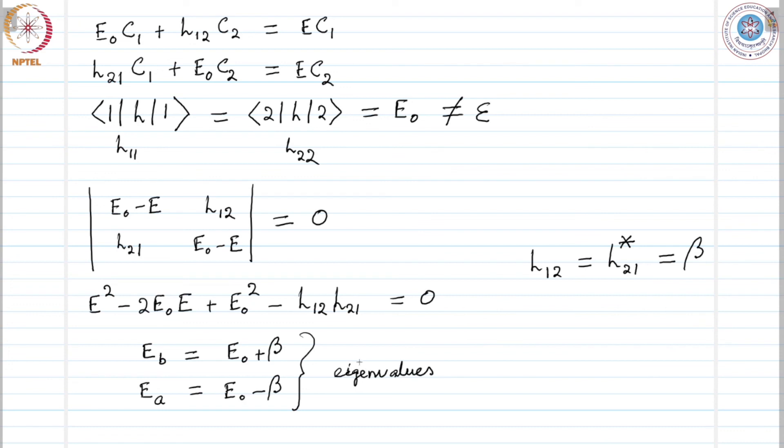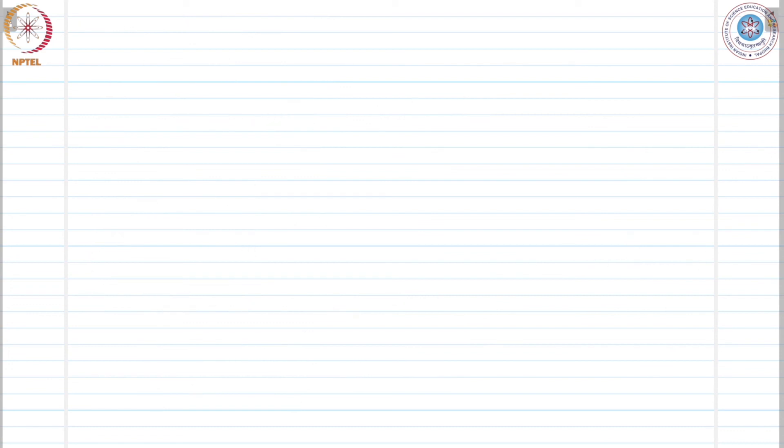How about the eigenstates? The normalized state vector corresponding to EB would be given as psi B. B stands for bonding and A stands for anti-bonding. We will realize their meaning later on.